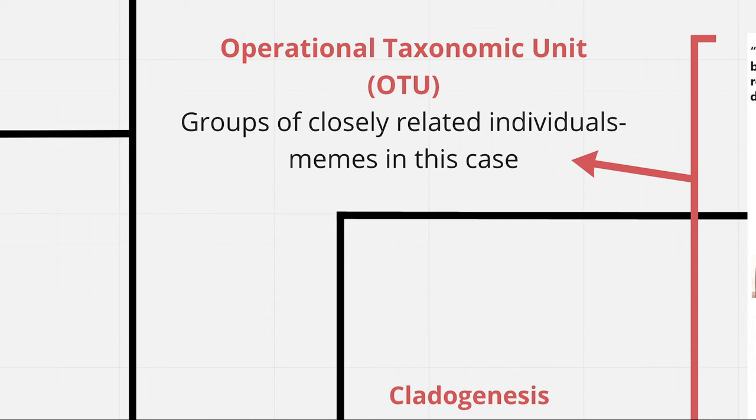Before we get to the memes, there are several terms we need to define. There are nine operational taxonomic units, or OTUs, which are just groups of similar individuals. In this case, categories of memes.